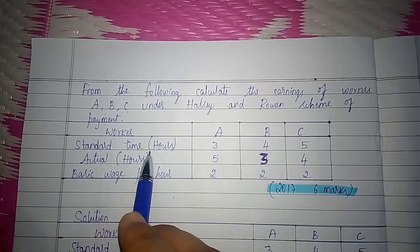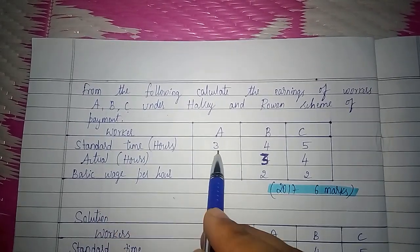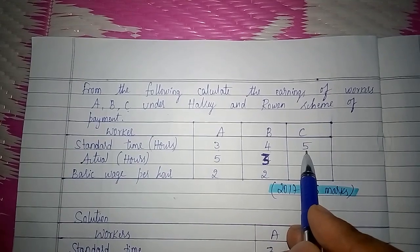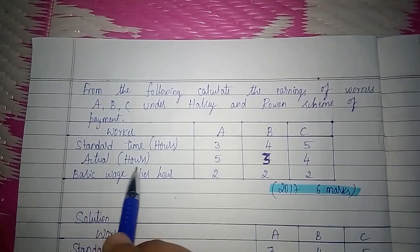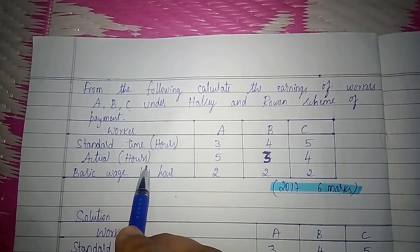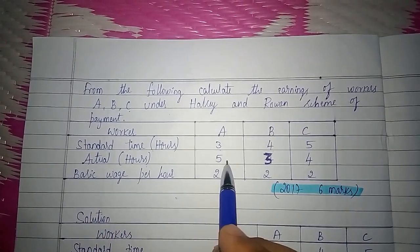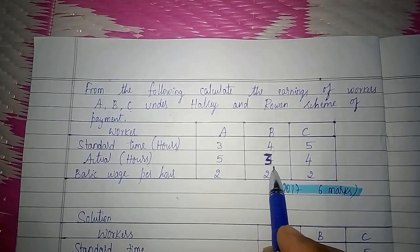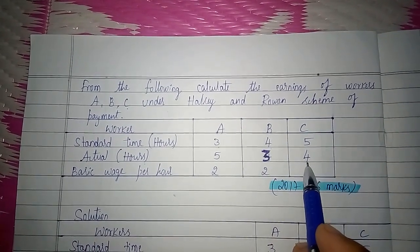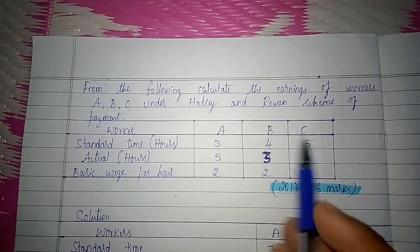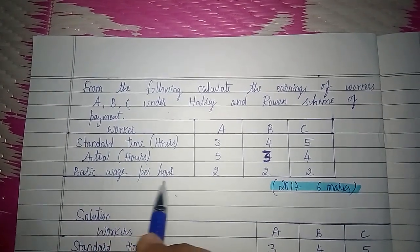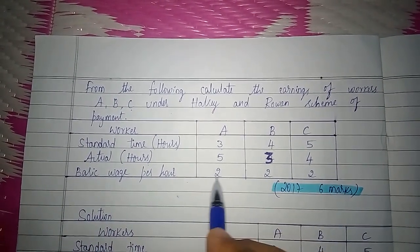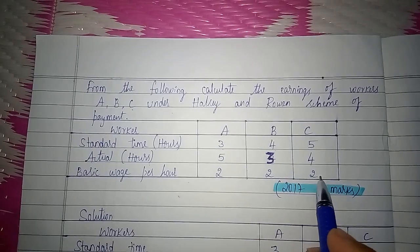They have given standard time: three hours for A, four hours for B, and five hours for C. Actual time taken by the workers to complete the work is five hours for A, three hours for B, and four hours for C. Basic wage per hour is two rupees for all three workers.